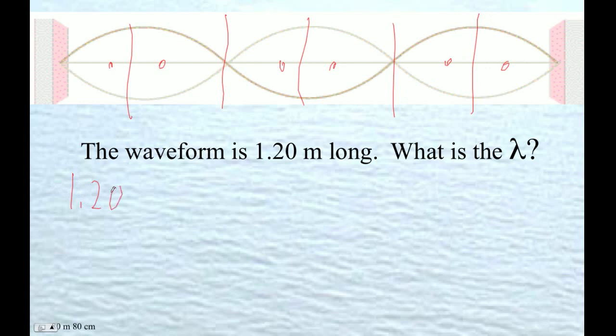So 1.20 meters is 6 quarter wavelengths. So the wavelength is 4 sixths of that. 1.2 times 4 divided by 6 is, of course, 0.8.